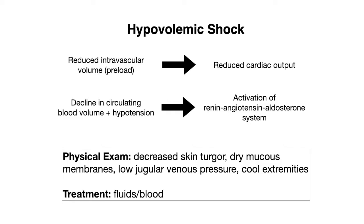On physical exam in hypovolemic shock, we'll find decreased skin turgor, dry mucous membranes, and a low jugular venous pressure — all indicating signs of hypovolemia — as well as cool extremities indicating vasoconstriction as the body tries to maintain blood pressure. Treatment of hypovolemic shock focuses on replacing the volume that's been lost in the form of fluids or blood products.